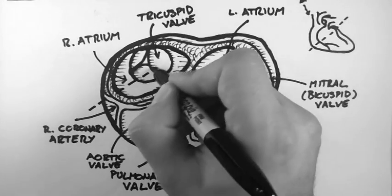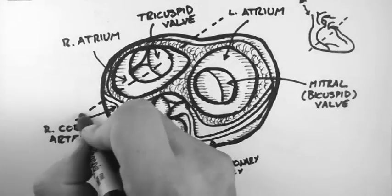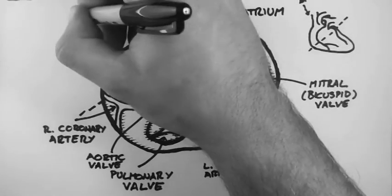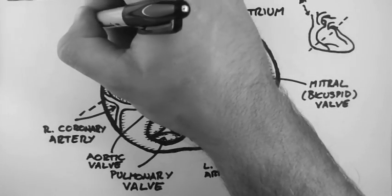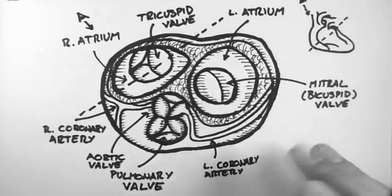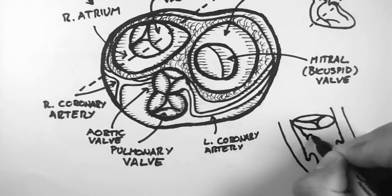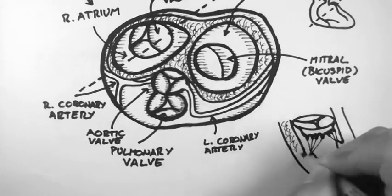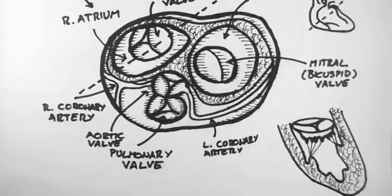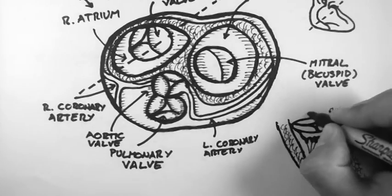Now if I take a cut through this heart here, right through the centre of this valve and we look at the heart from this angle here we should see something like this. So here is the tricuspid valve.